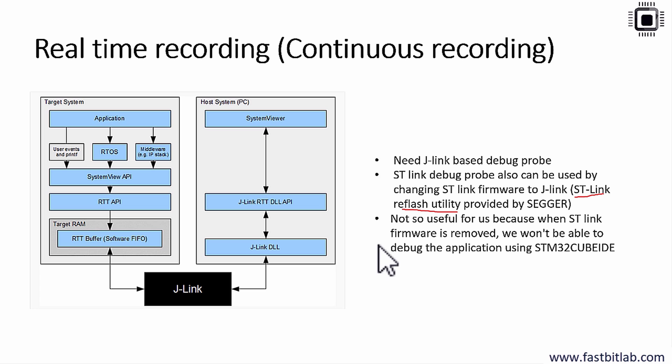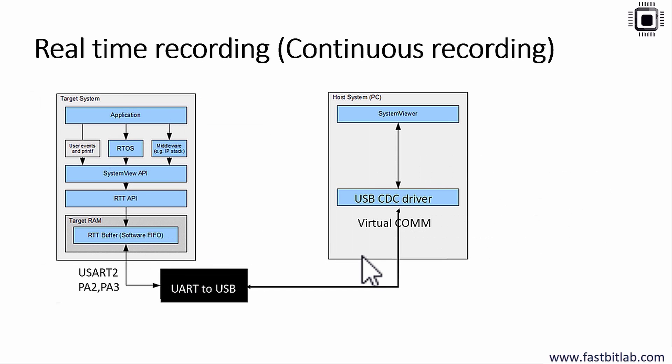We will not follow the J-Link method in this course because when you remove the ST-Link firmware from the STM32 discovery board, you won't be able to debug or flash code using STM32 CubeIDE. That's why in this course we will use real-time recording over UART communication, which lets us retain the ST-Link firmware and still debug our application.